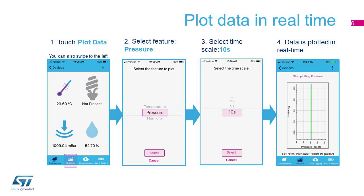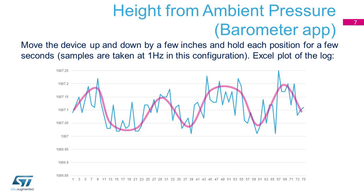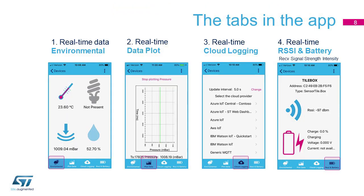By swiping the screen to the left, you can also plot the data. First, select the feature to plot, and then select the time scale. Data is plotted in real-time. For example, ambient pressure can be seen changing in real-time if you move the SensorTile.Box up and down in the air by a few tens of centimeters.